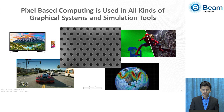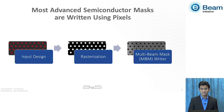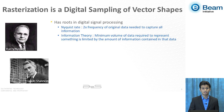The most advanced masks written today are written using pixels — they are written using multibeam mask writers. What the mask writer receives is an input design. This input design then undergoes rasterization, which is a process of converting the vector shapes into some form of pixel-dose area coverage map. The rasterization is a crucial step because it makes the writer know how much dose to put at a particular location on mask. In fact, rasterization is just digital sampling of vector shapes.